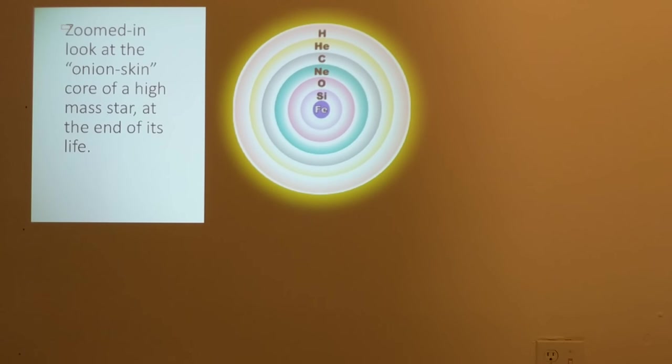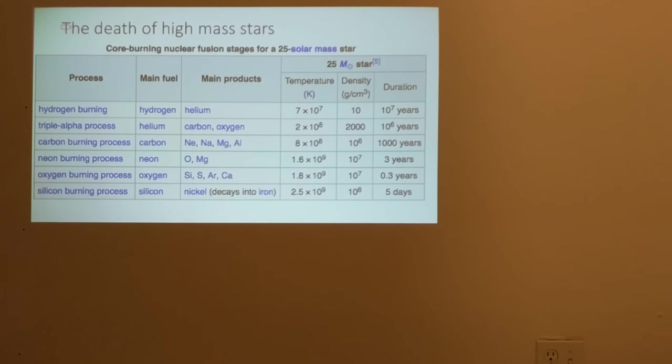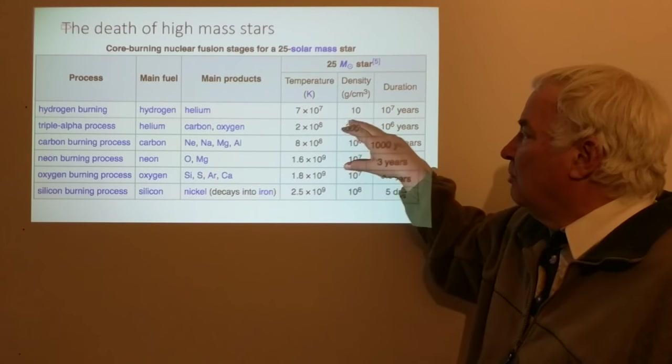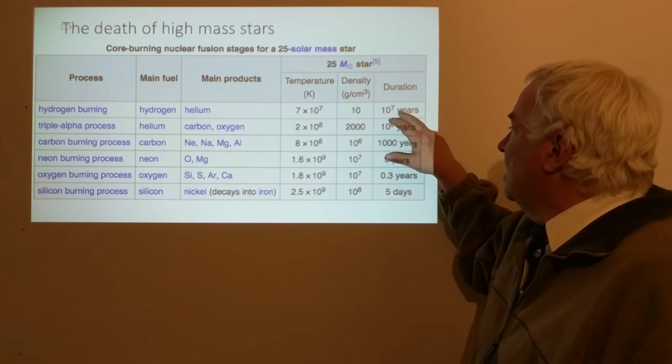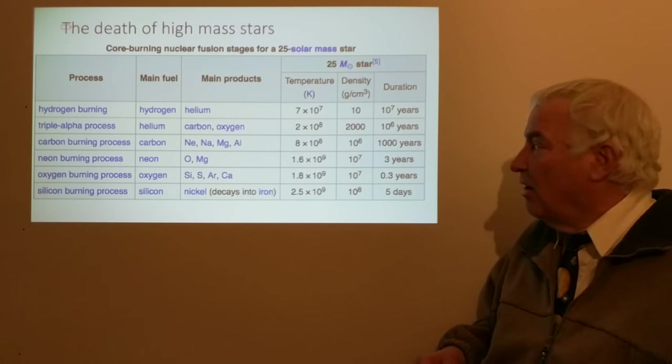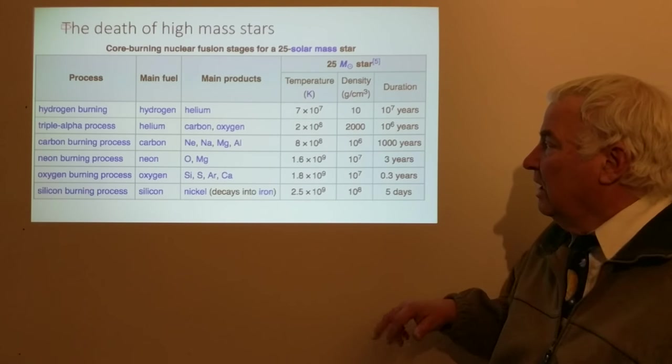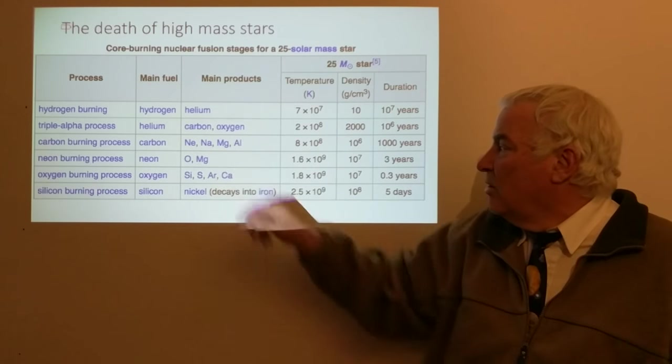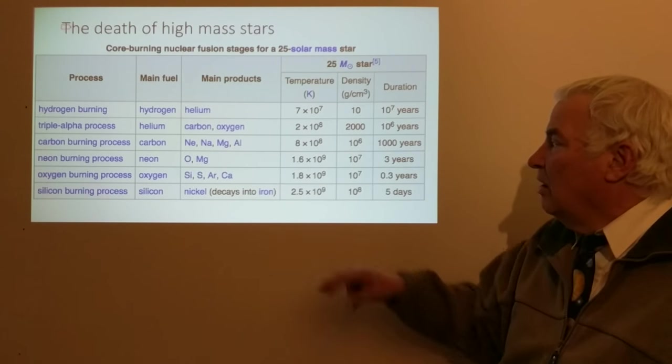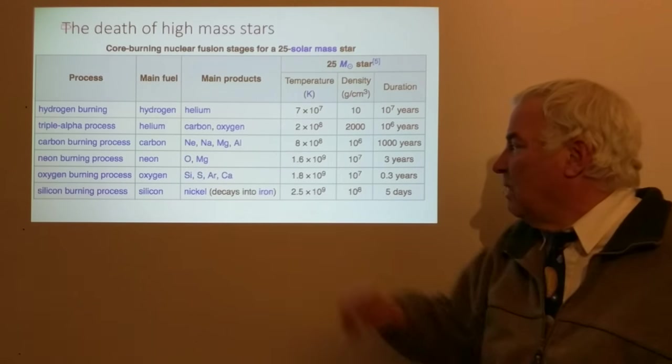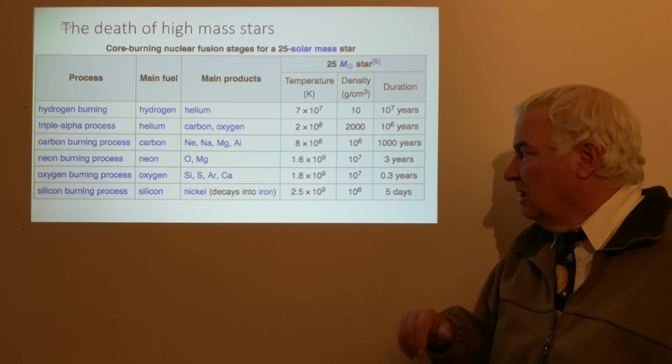Once the core ends fusion and turns off, it will collapse. Looking at the timescale and temperature very briefly: the duration of hydrogen burning on the main sequence is about 10 million years, which is short compared to lower-mass stars. But the later stages are even shorter. Helium fusion into carbon and oxygen takes only about 1 million years. Neon, sodium, magnesium, and aluminum produced by fusion of carbon takes about a thousand years. Neon producing oxygen and magnesium takes only 3 years.